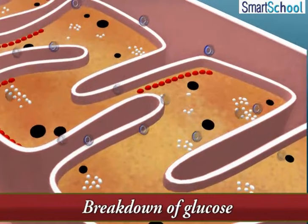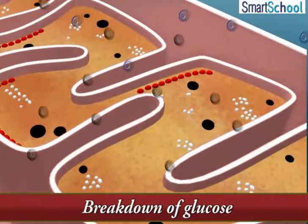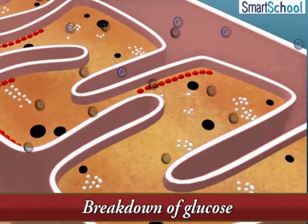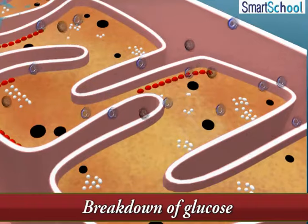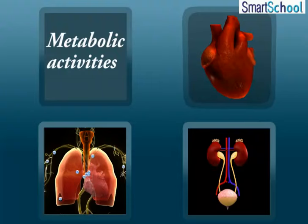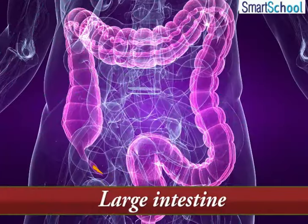Energy needed for various activities is obtained by the breakdown of glucose in the cells. Glucose breaks down with the help of oxygen into carbon dioxide and water, and energy is released for various metabolic activities of the body. The remaining undigested and unabsorbed food then enters the large intestine.